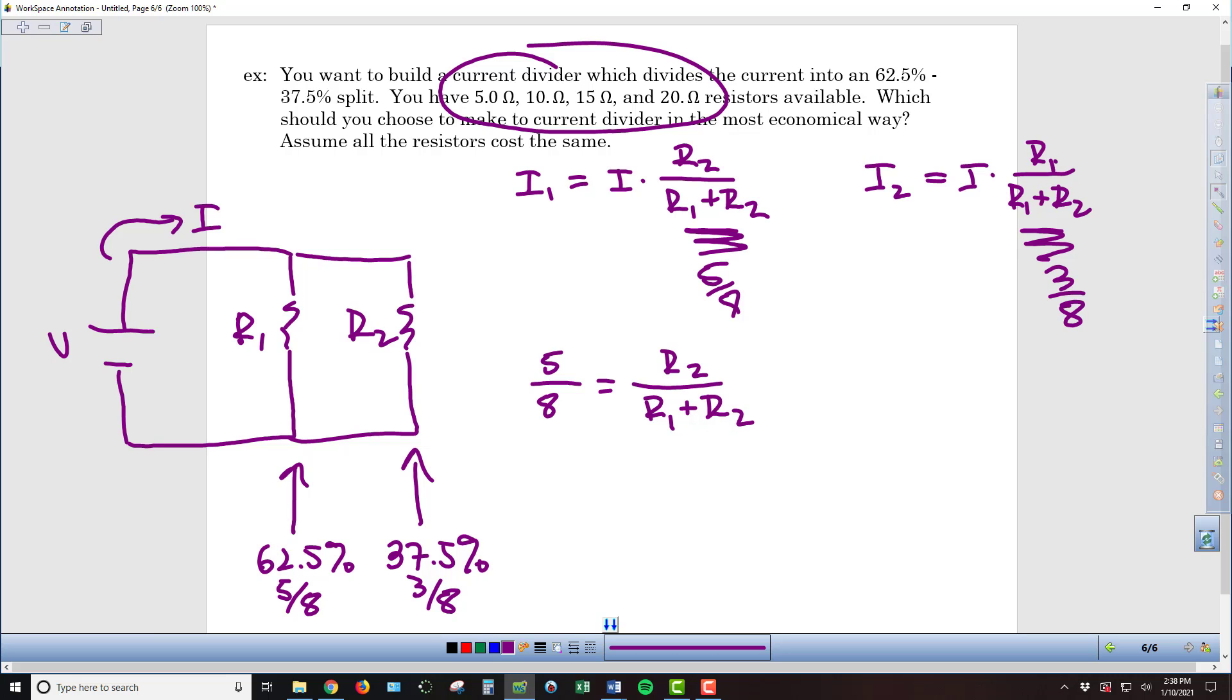I can say that 5 eighths equals R2 over R1 plus R2. And so I need to somehow select from these resistances that I have available, 5, 10, 15, and 20, I need to end up with this fraction, R2 over R1 plus R2, to equal 5 eighths.